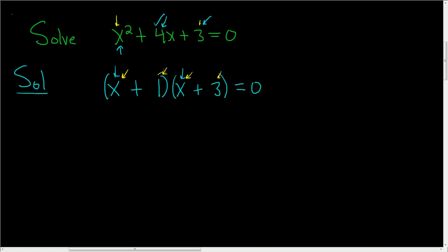And then the middle term and the outside term should give you this term here. So let's see: x and then 3x is 4x, so it checks.